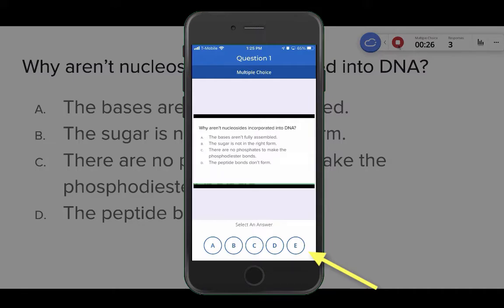Your students respond simply by selecting the answer they think is correct. While a poll is open, students can select and even change their answer as many times as they'd like.